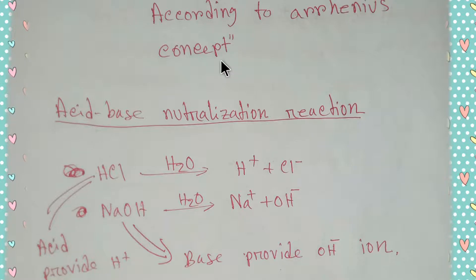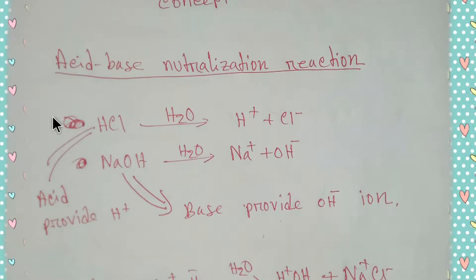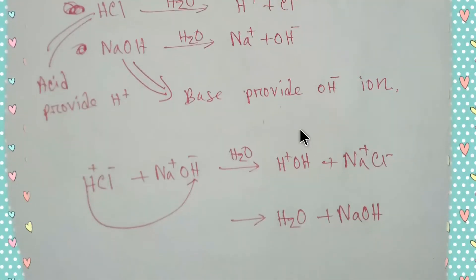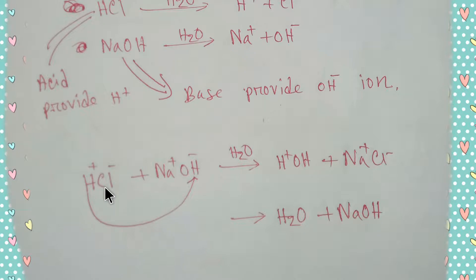According to Arrhenius theory, we know that acid provides hydrogen ions in aqueous solution. On the other hand, base provides hydroxyl ions in aqueous solution.